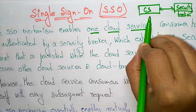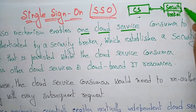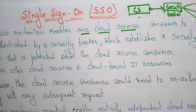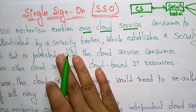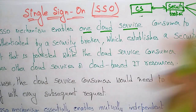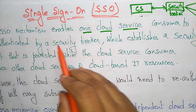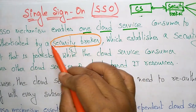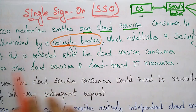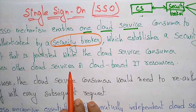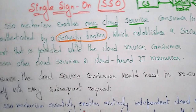So if this one cloud service wants to access another cloud service, whatever different cloud services are present, it has to be authenticated with a security broker. In this Single Sign-On security mechanism, there is a concept of a security broker. With the help of the security broker, each cloud service will have an established security context that persists while the consumer accesses other cloud services or cloud-based IT resources.